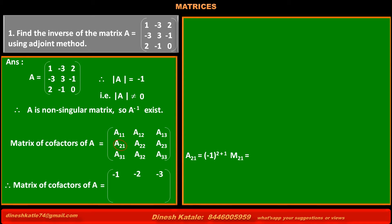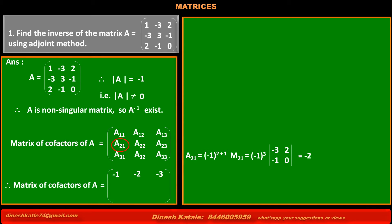A21 is the cofactor of the element at second row, first column, equal to (-1) raised to 2+1 into its minor M21. That is (-1) raised to 3 into its minor with elements -3, 2, -1, 0. Solving this, we get -2. So the value of cofactor A21 is -2.